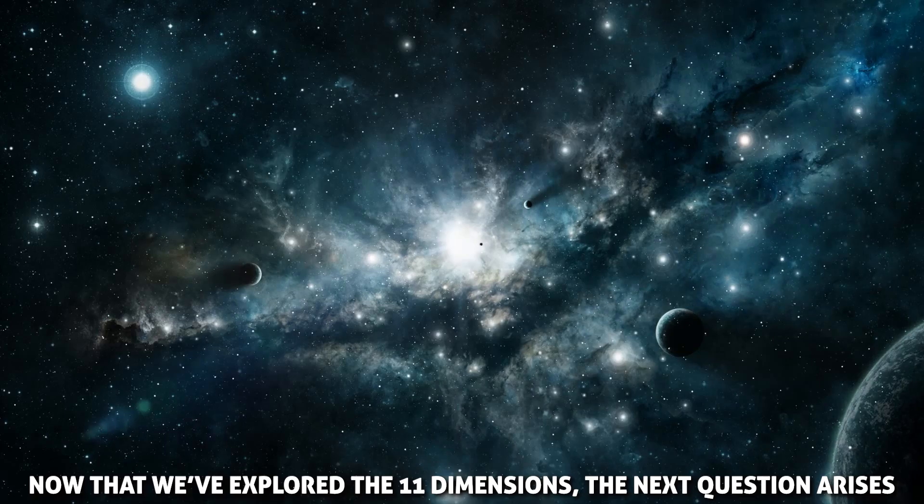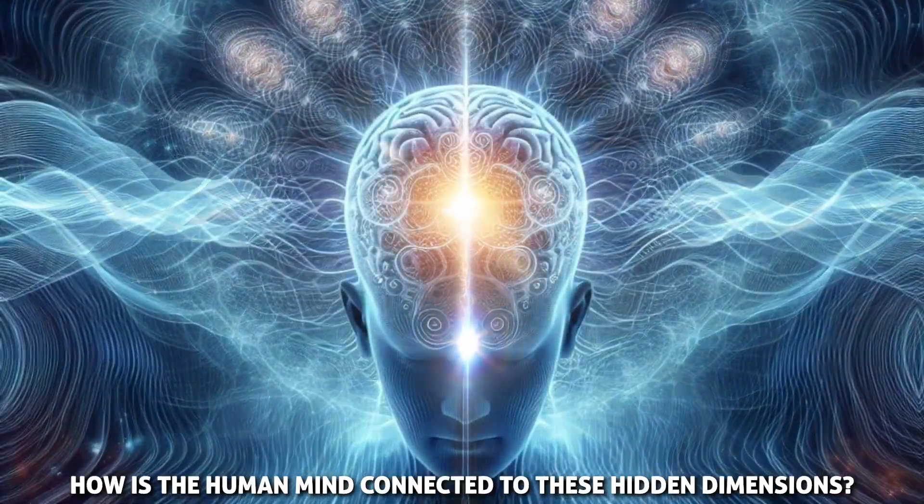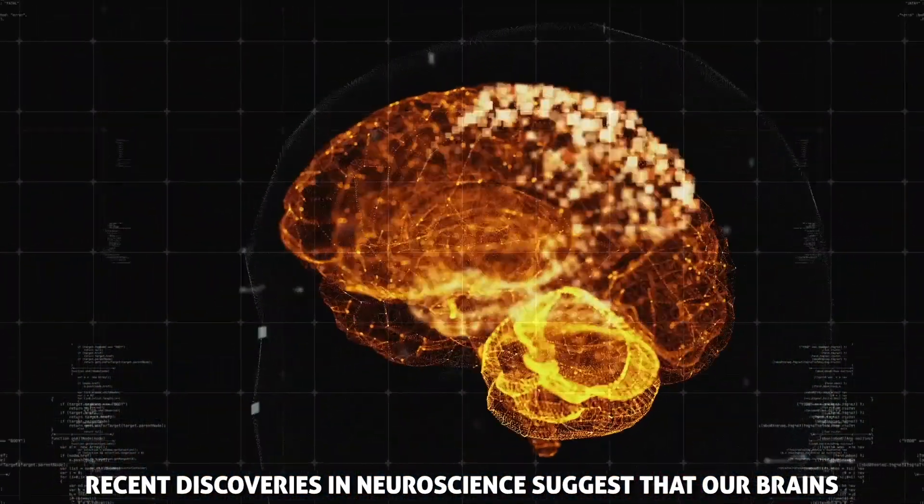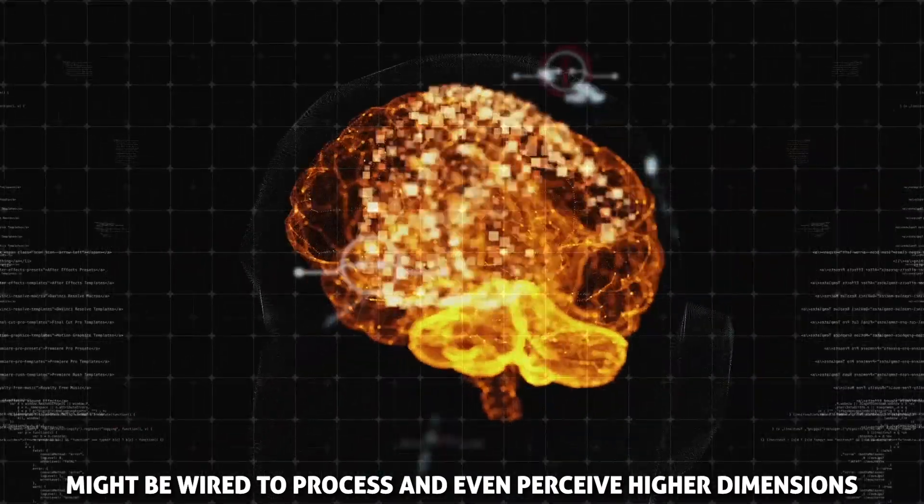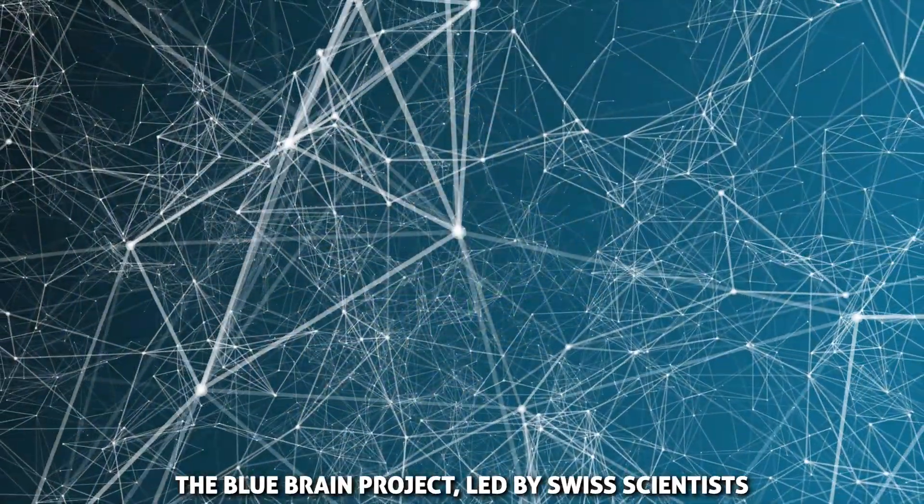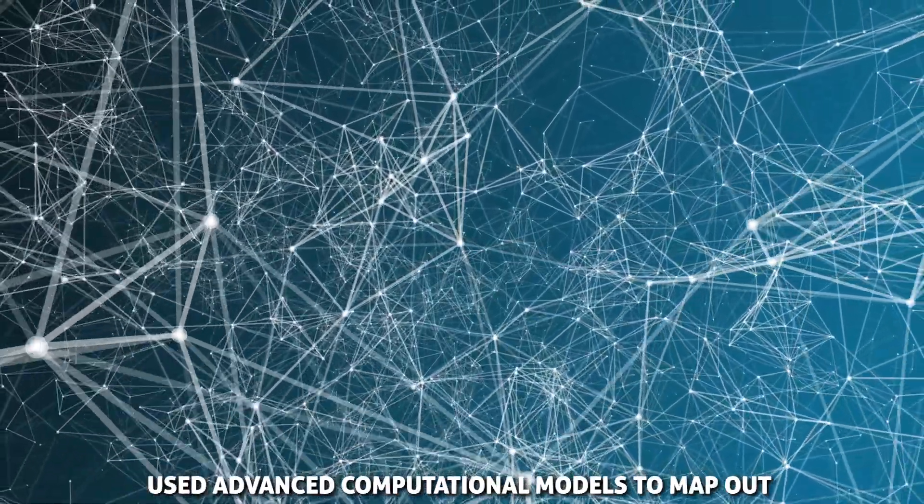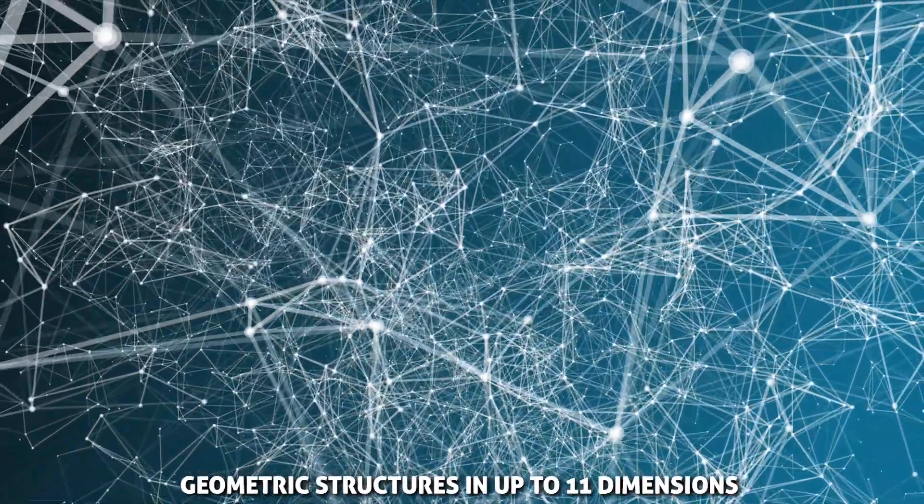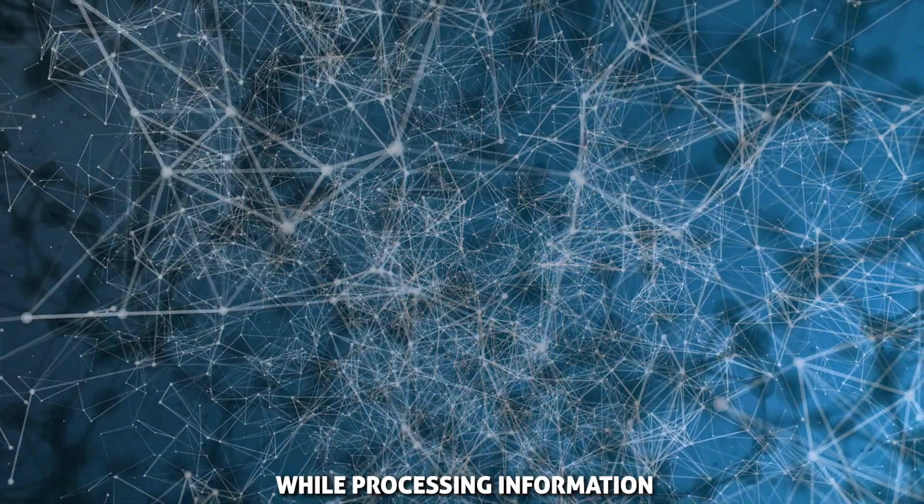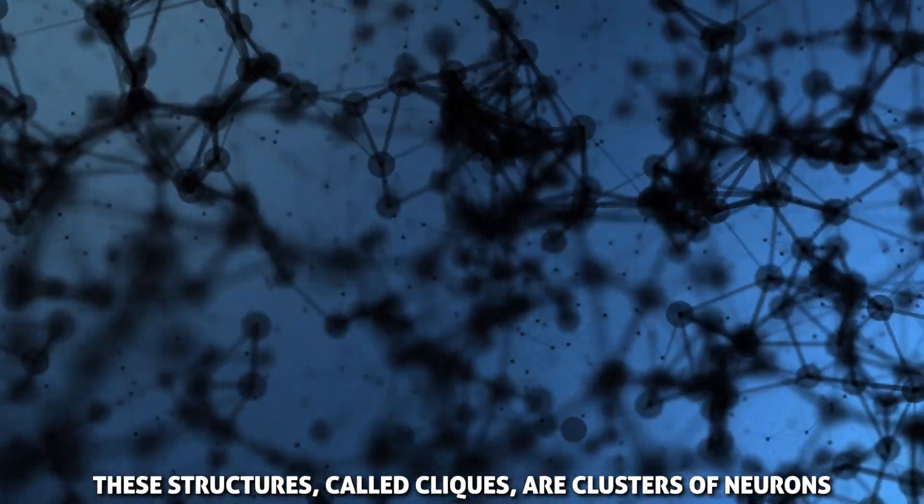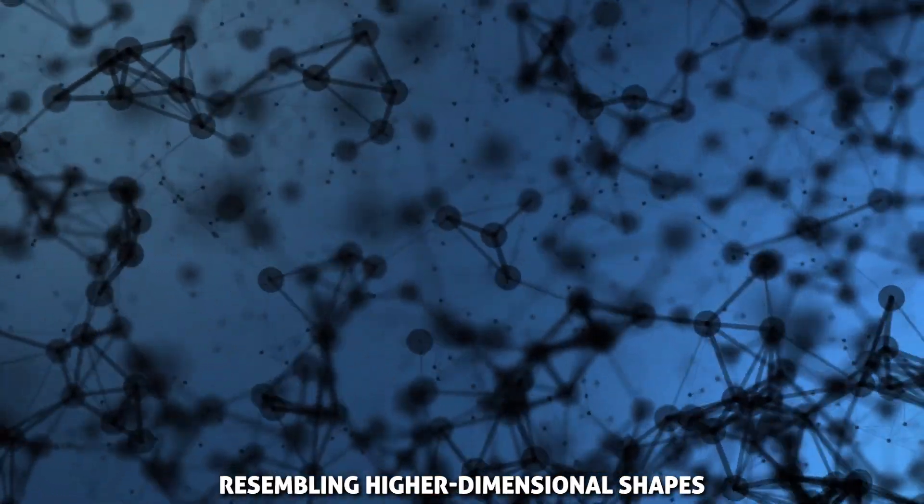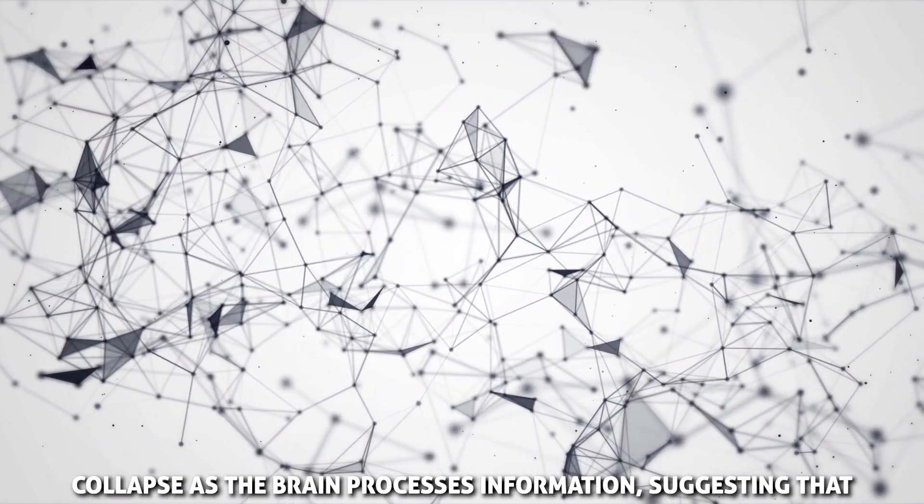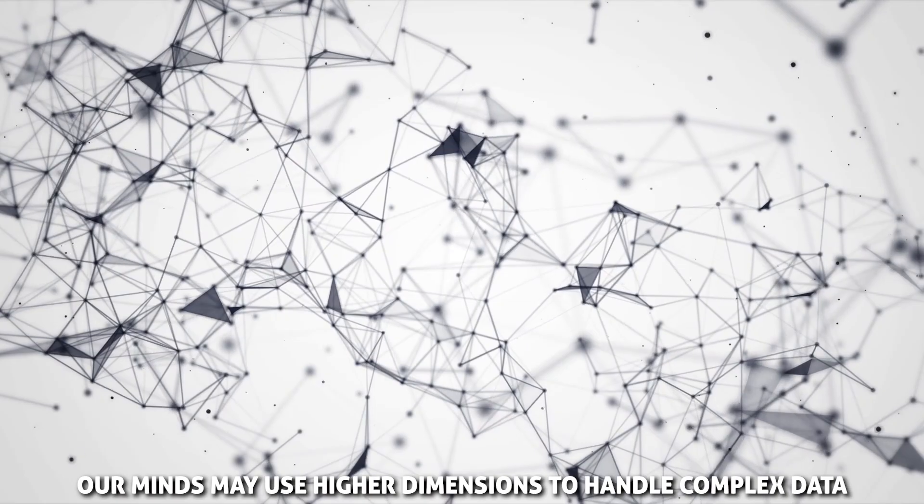Now that we've explored the eleven dimensions, the next question arises. How is the human mind connected to these hidden dimensions? The answer might lie in the complex workings of our brain. Recent discoveries in neuroscience suggest that our brains might be wired to process and even perceive higher dimensions. The Blue Brain Project, led by Swiss scientists, used advanced computational models to map out the structure of the brain. They found that the brain creates geometric structures in up to eleven dimensions while processing information. These structures, called cliques, are clusters of neurons that connect in very specific patterns, resembling higher dimensional shapes.